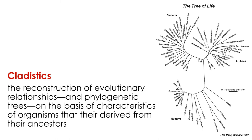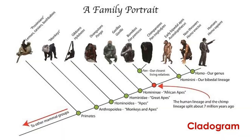This approach is called cladistics. Cladistics is the reconstruction of evolutionary relationships on the basis of characters of organisms that they have derived from their ancestors. The overarching goal of cladistics is to produce phylogenetic trees, or cladograms, like this one, which illustrates the evolutionary histories of apes including humans, chimps, gorillas, and various monkeys. As you can see, we humans — Homo sapiens — are most closely related to extinct species of bipedal apes like Homo erectus and Australopithecus, and our closest living relatives are chimpanzees.